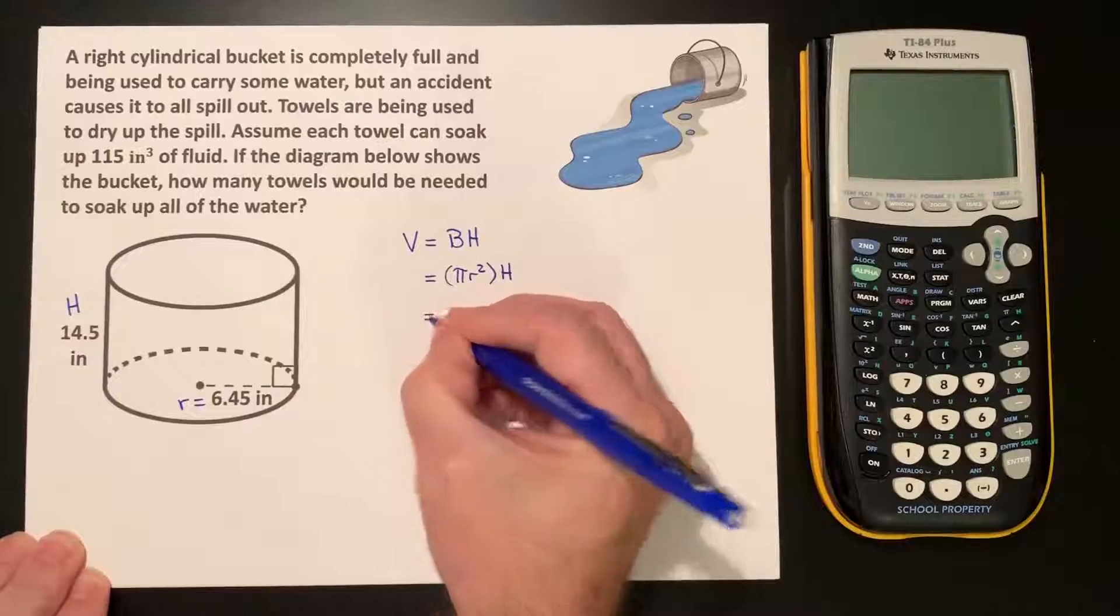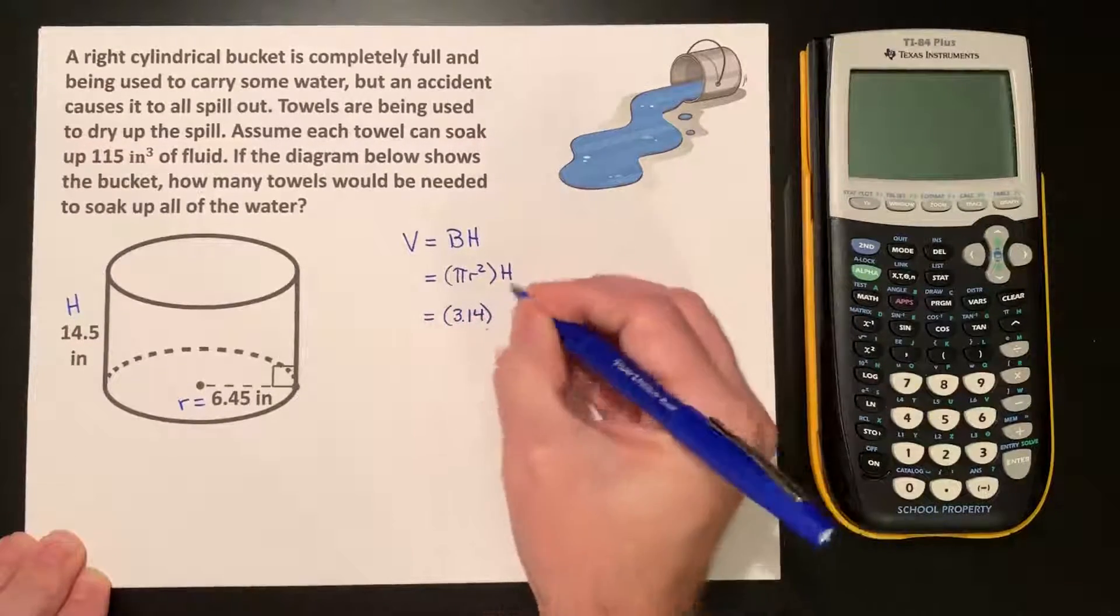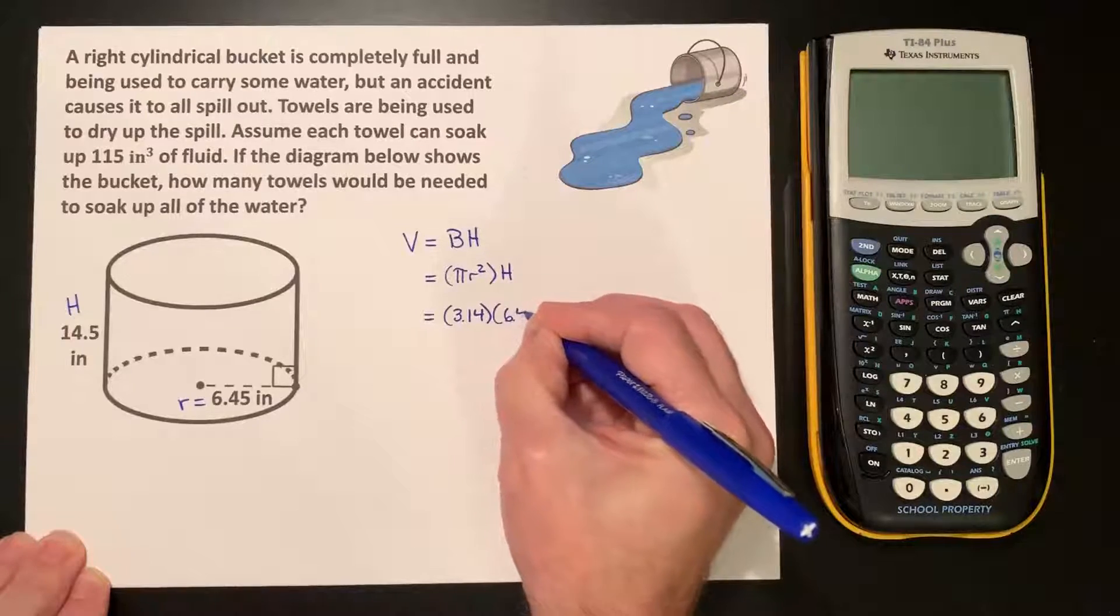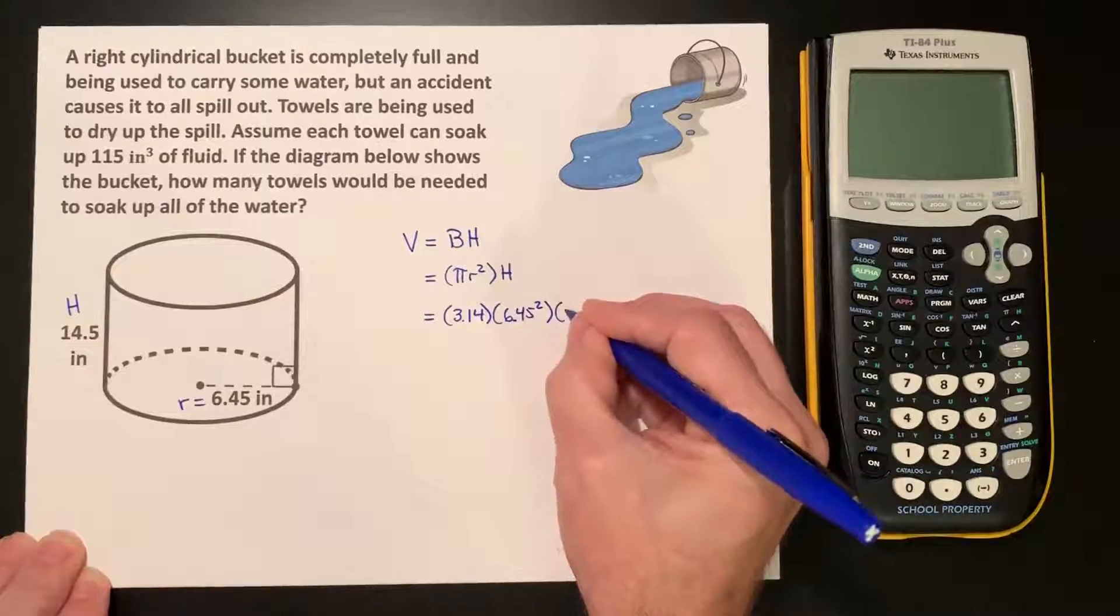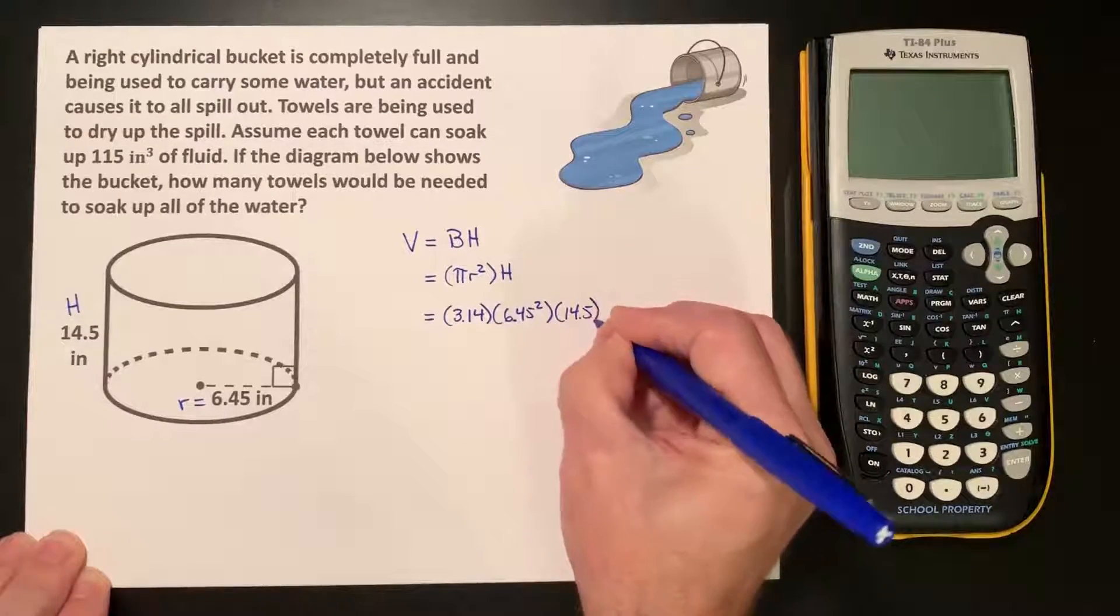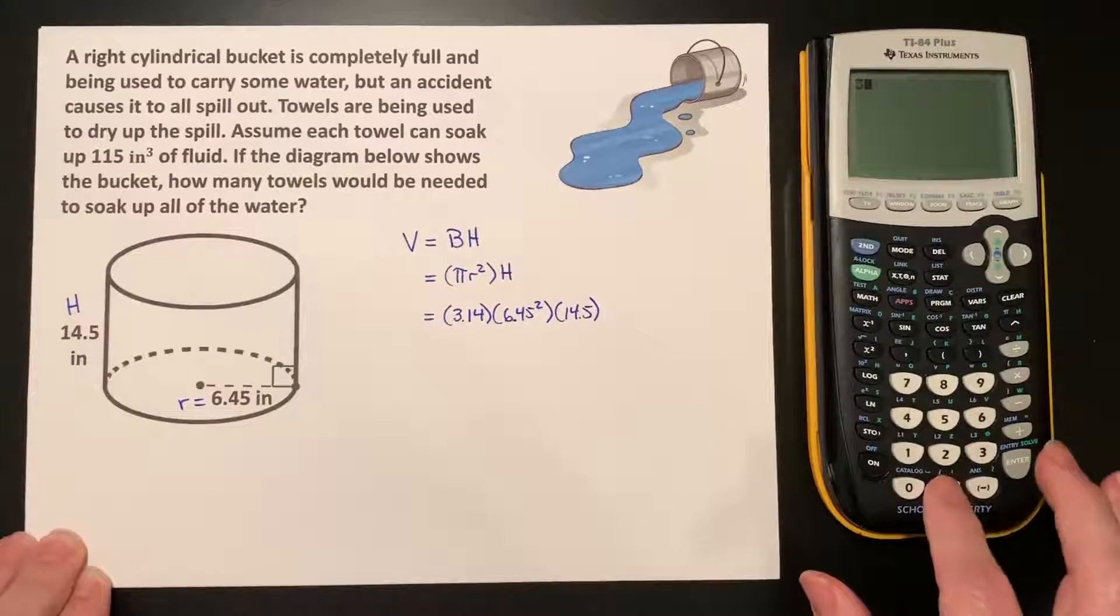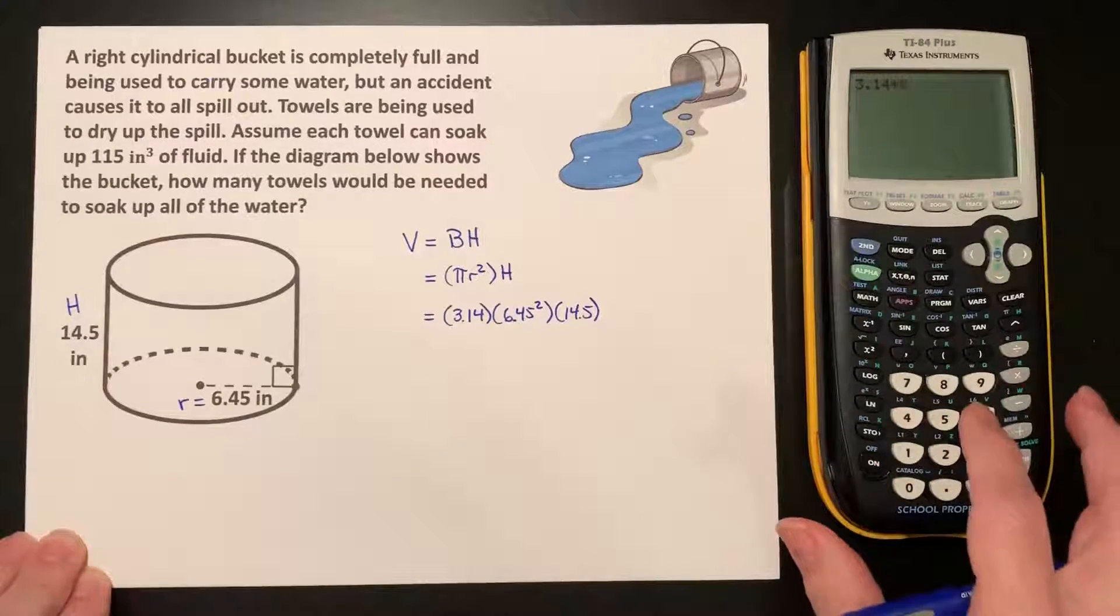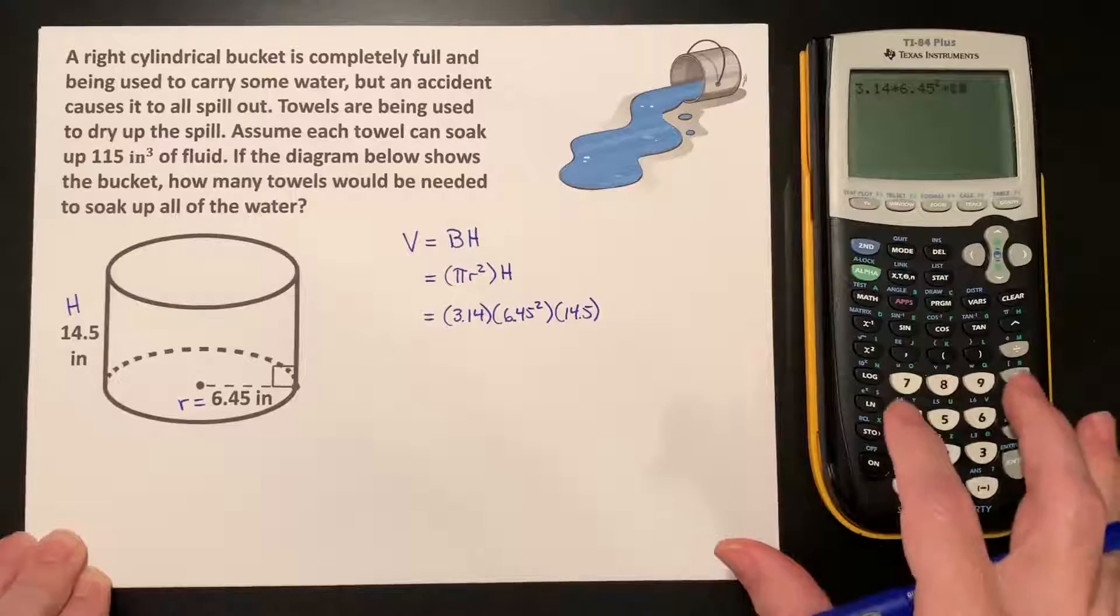Well we put in what we know: π, we are going to use 3.14, radius 6.45 squared, and the height 14.5. So we input this in the calculator: 3.14 times 6.45 squared times 14.5.